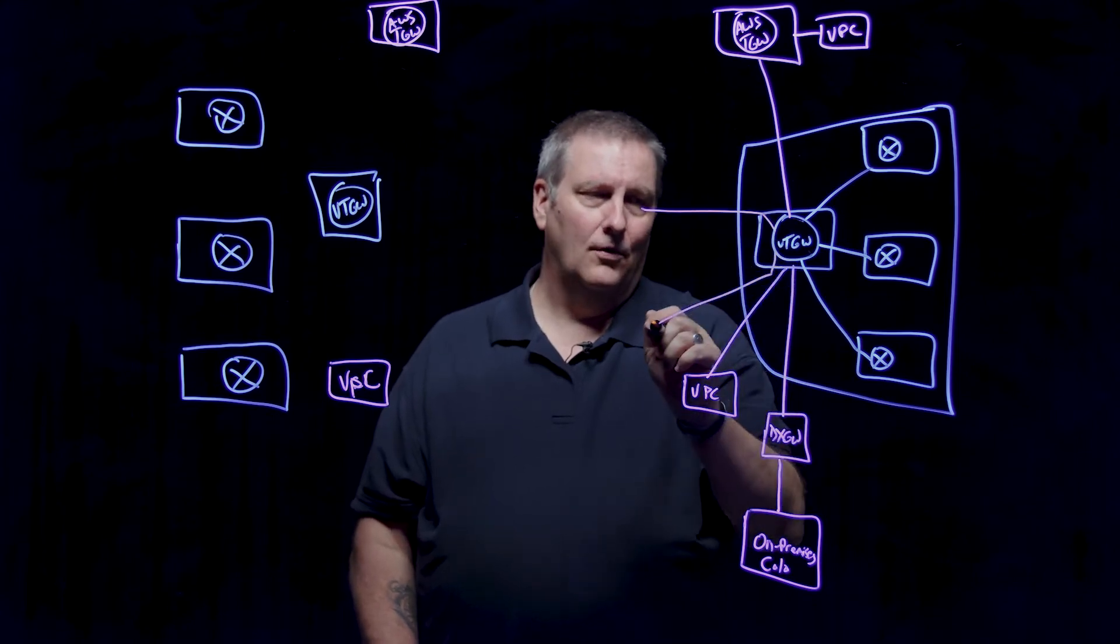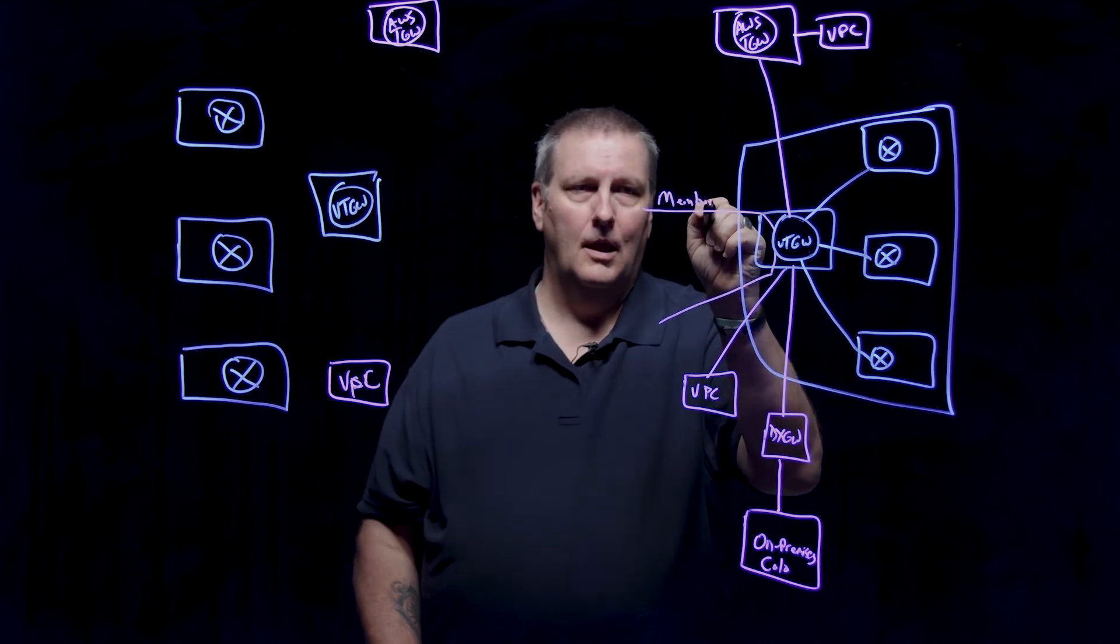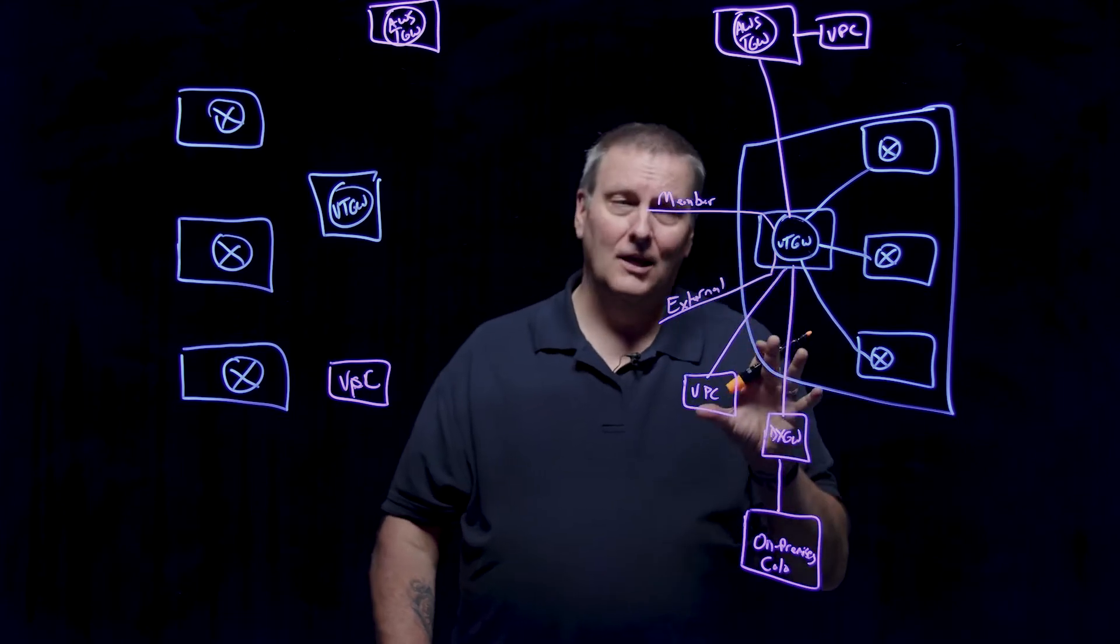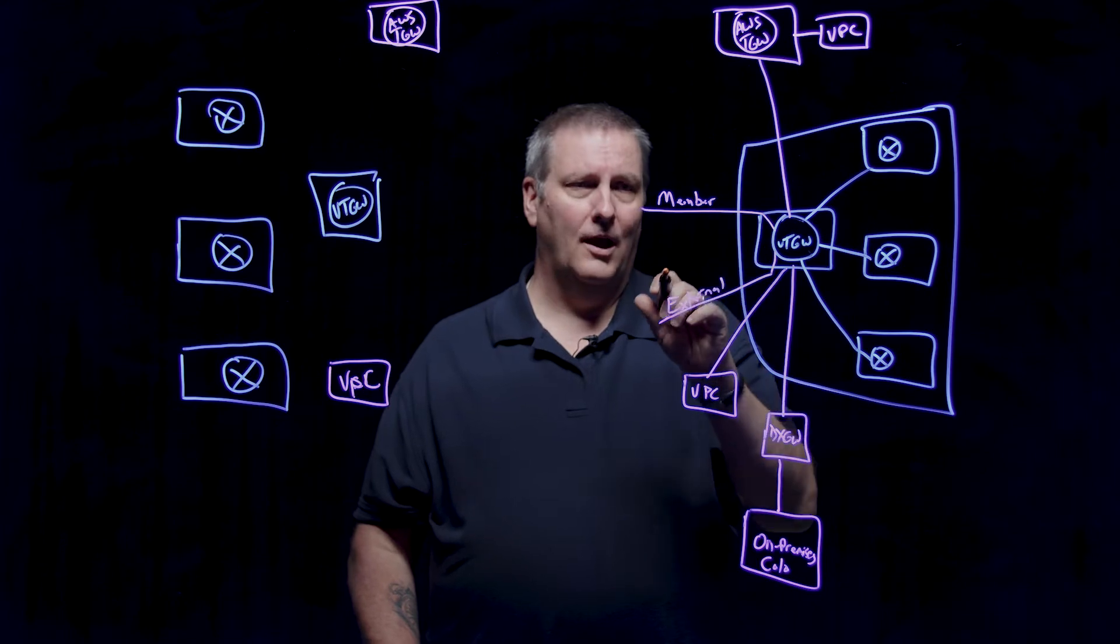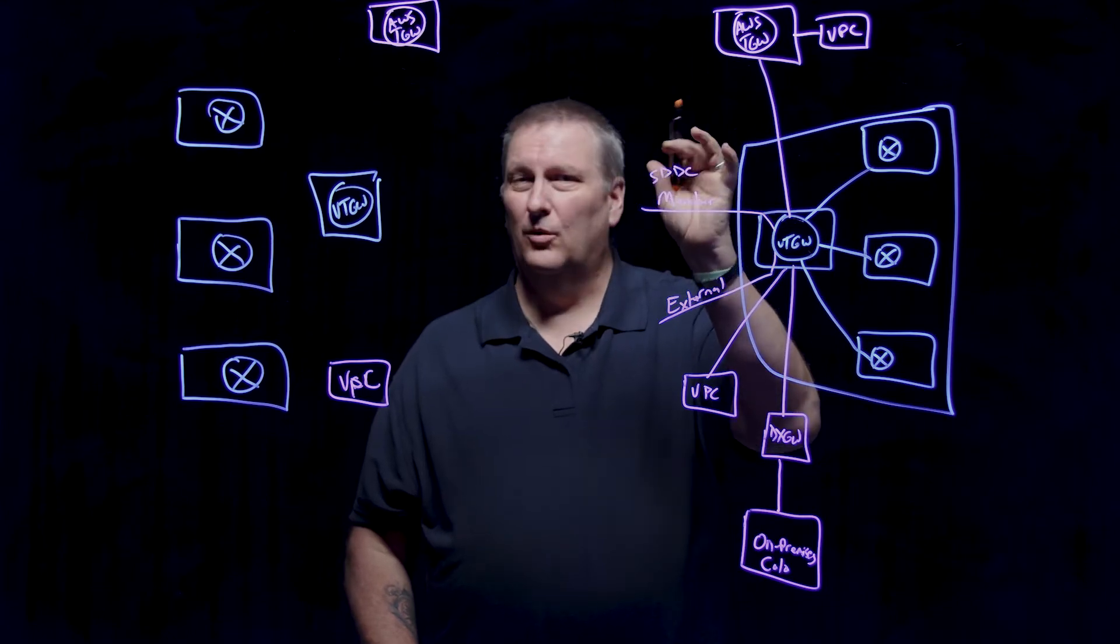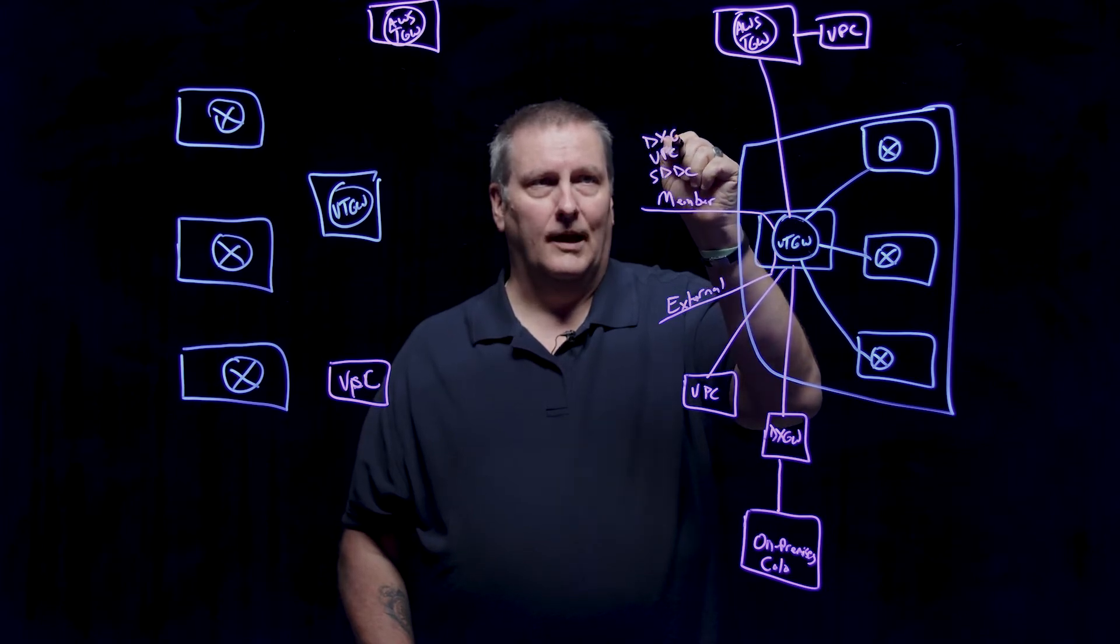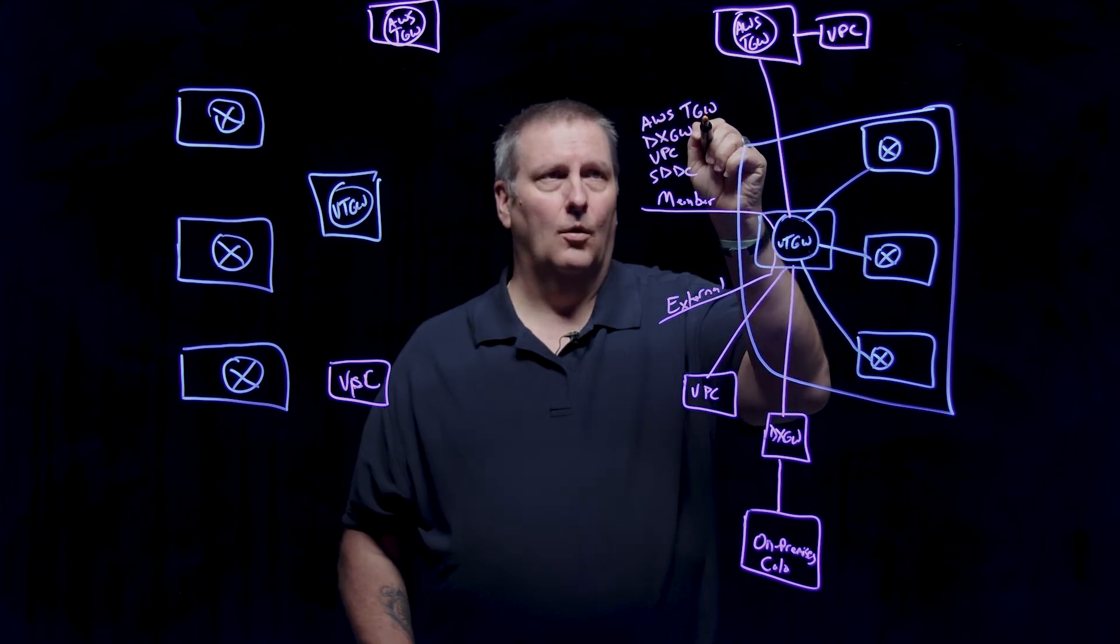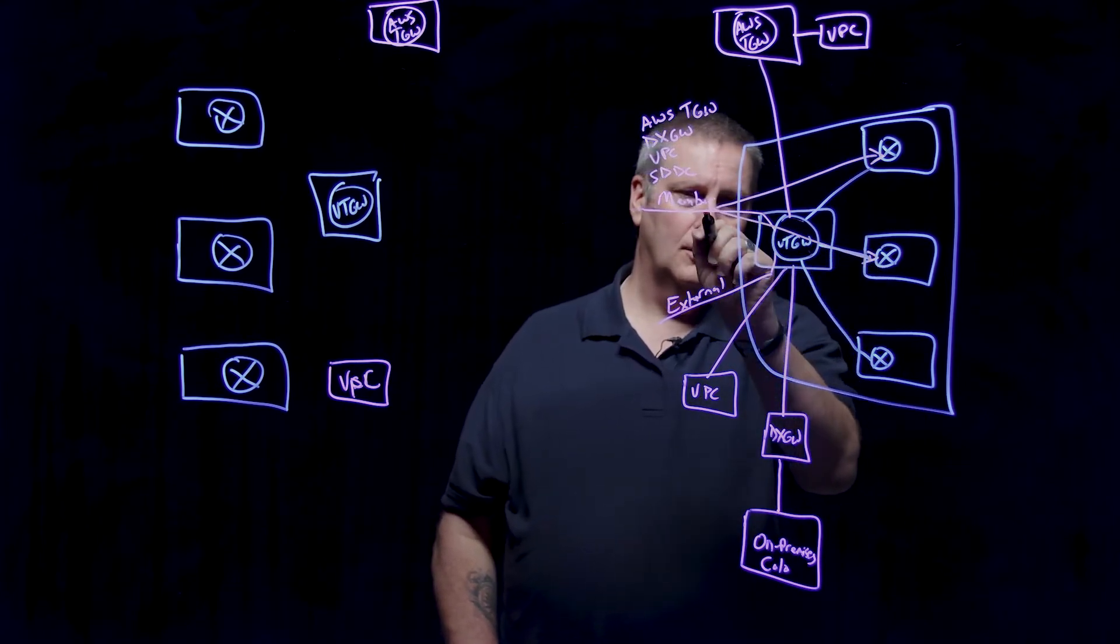That concept, the way we manifest this inside of Transit Gateway, is we have two route tables. We have one called the member route table and one called the external route table. Not terribly creatively named, but the idea is we want to convey who can talk to what across this environment. Member route tables comprise all of the SDDCs and all external networks that are learned. This could be VPCs, this could be direct connect gateway learned routes, AWS TGW learned routes, etc. That is the member table.